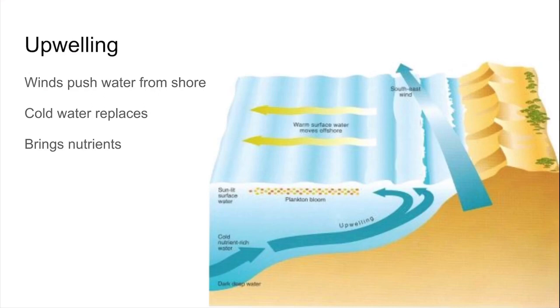In order to bring the nutrients back up, this is where the process of upwelling takes place. Winds blowing near the coast will move warm surface water out away from the shore. And because water isn't compressible, if it moves away, some of it has to take its place. This drives cold, nutrient-rich water back up towards the surface. This often occurs along coastal areas and can help create thriving ecosystems there.